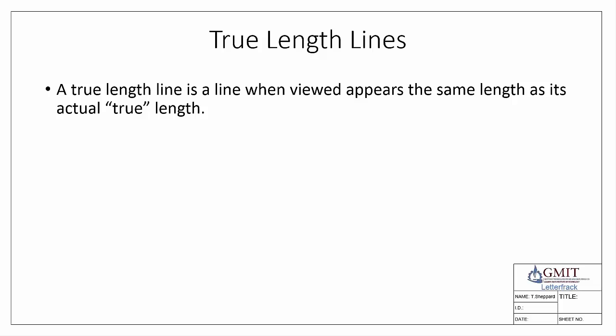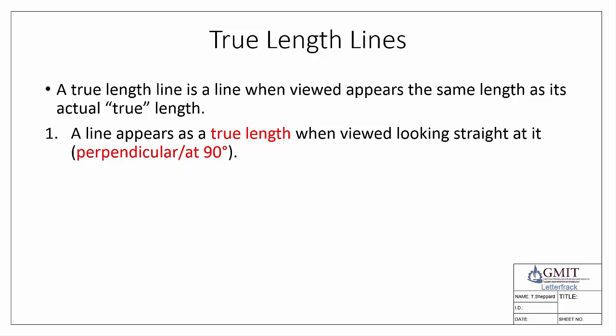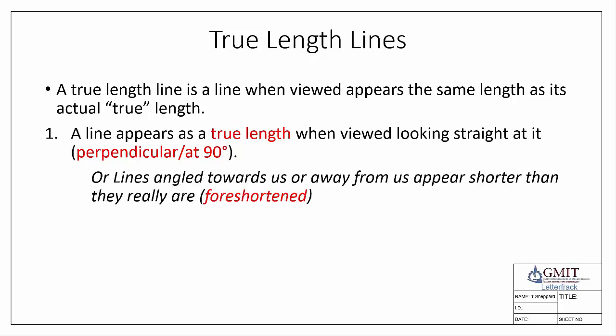To locate a true length line we need two conditions. The first condition is that a line appears as a true length when viewed looking straight at it — graphically speaking, this means looking perpendicular to it, or at 90 degrees to it. If we look at a line that's angled towards us or away from us, it will appear shorter than it actually is; this is known as being foreshortened.